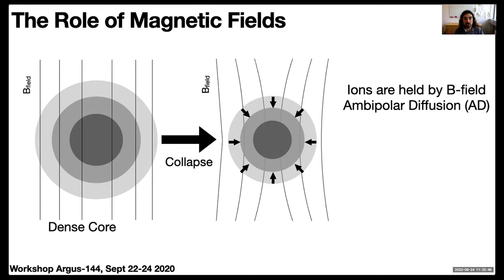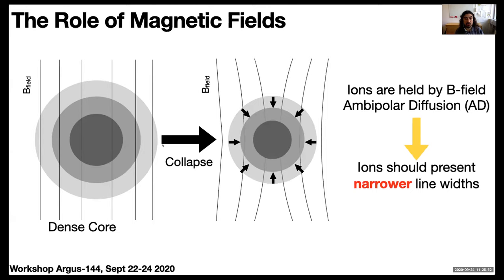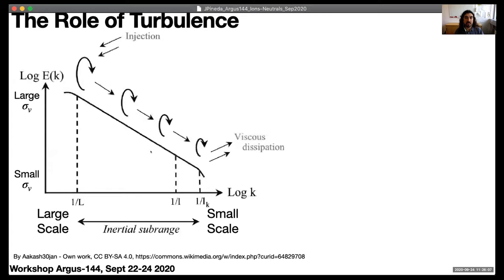So this is the ambipolar diffusion process. What it implies is that if we look at ions and neutrals, then the ions should present narrower line widths if we see along the line of sight, because overall they have less motion than the neutrals.